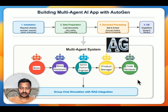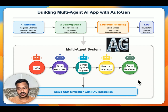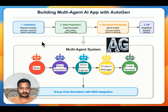Today we're going to see how to build a multi-agent AI application using Autogen. Autogen is an open-source programming framework for agentic AI that enables multi-agent conversation. The setup starts with installing the required libraries: Autogen, LangChain, OpenAI, and Unstructured.